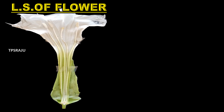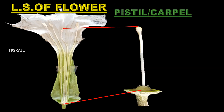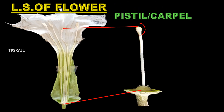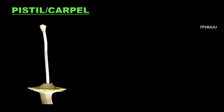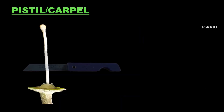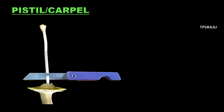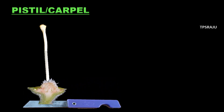Female gametes are present in the pistil of the flower. Observe here — this is the pistil or carpel. It has three parts: stigma, style, and ovary.